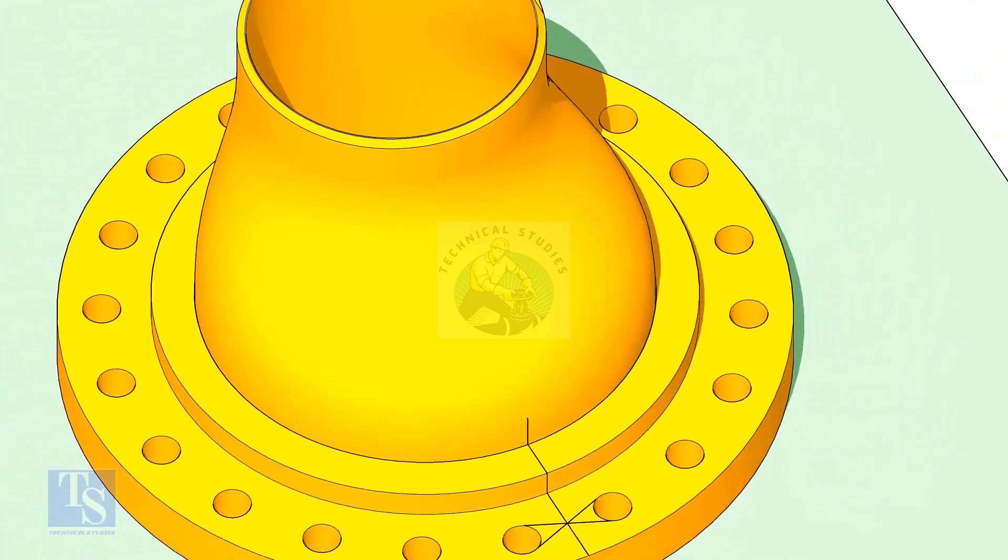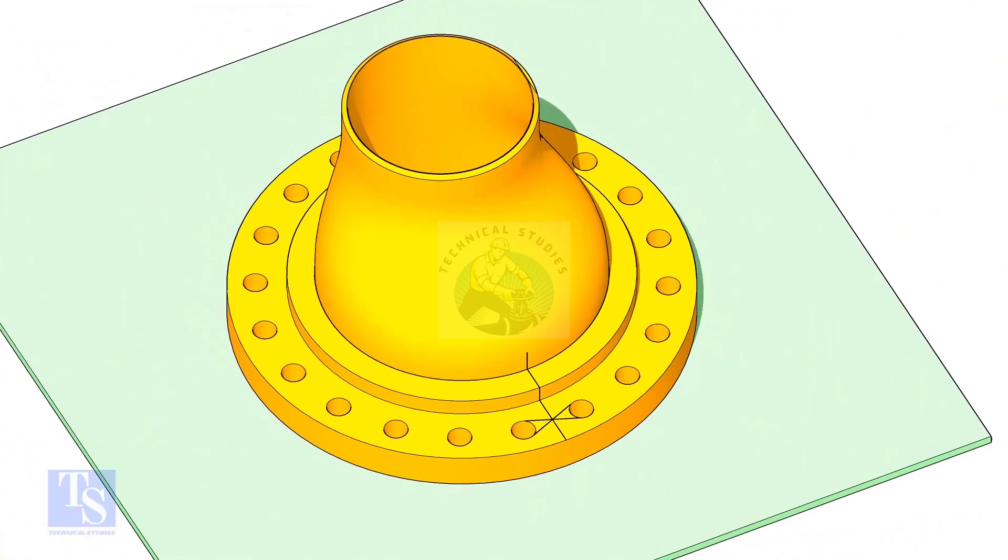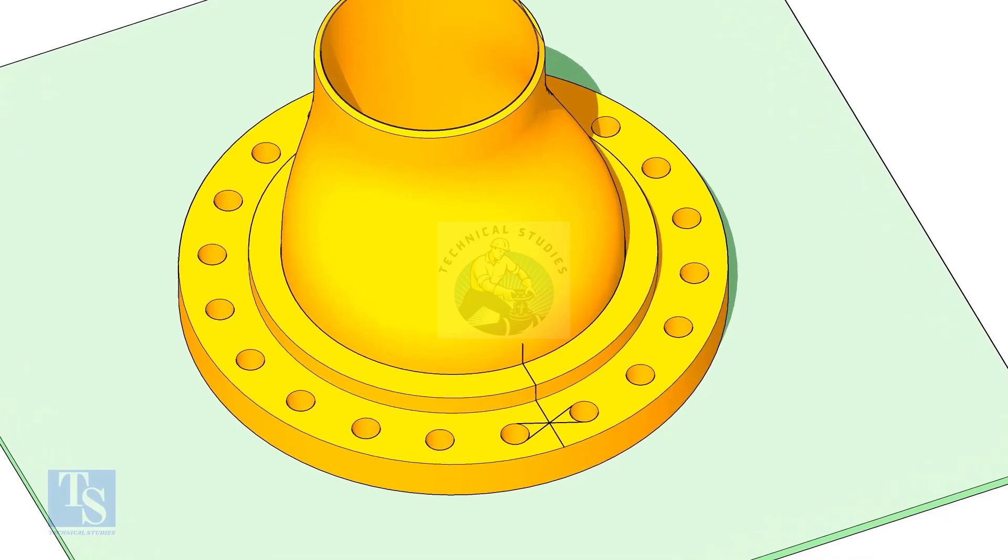Now put the reducer on the nuts in the flange. Match the center lines of the flange and the reducer.